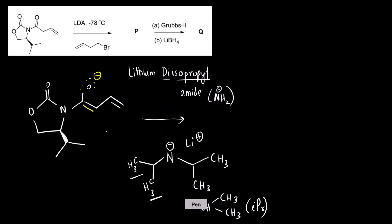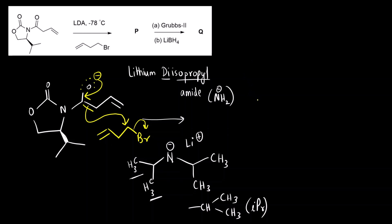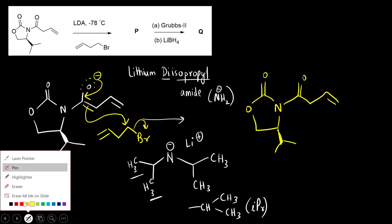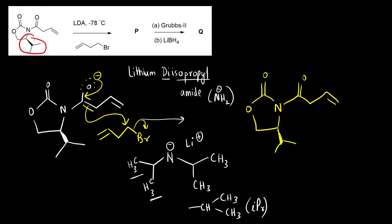The next step is to react it with the alkyl bromide that is given. The conjugate base will attack here and Br will go away as a good leaving group. So what we get is C double bond O with oxygen and nitrogen above the plane. Now the important question is what will be the stereochemistry of the R group? This group is above the plane of the paper, so there is steric hindrance. Therefore the R group will be attached below the plane — one carbon, two carbons — and then we have the double bond.